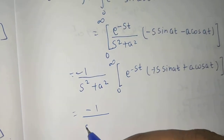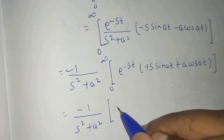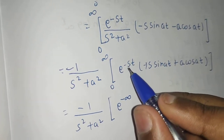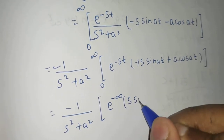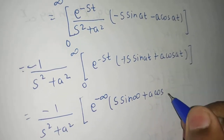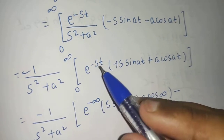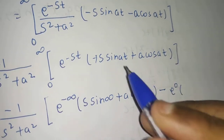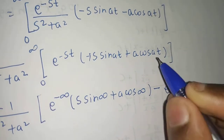Now we can put the limits. So this becomes minus 1 upon s squared plus a squared. Putting the upper limit of infinity: e to the power minus infinity becomes 0 because minus s times infinity is minus infinity, and e to the power minus infinity is 1 over e to the power infinity which is 0. So the entire upper limit term becomes 0. For the lower limit, putting t equals 0: e to the power 0 is 1, and we get s times sine 0 plus a times cos 0.